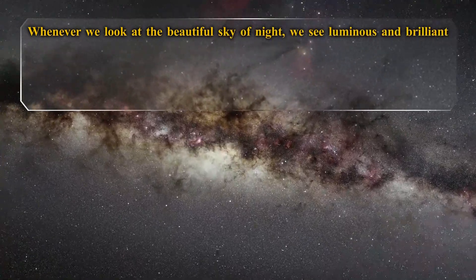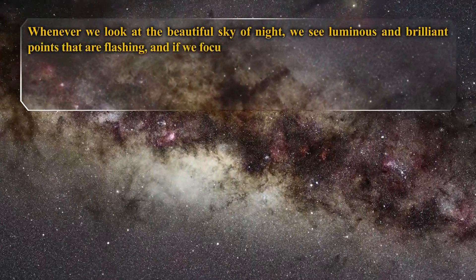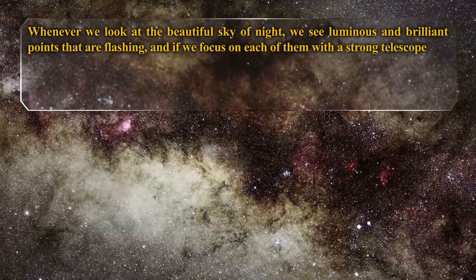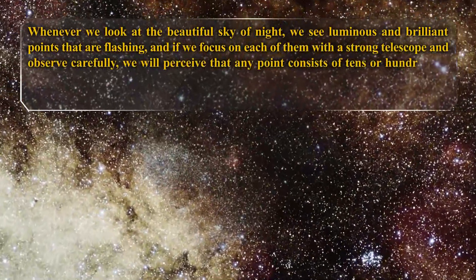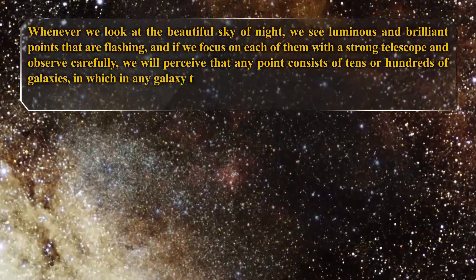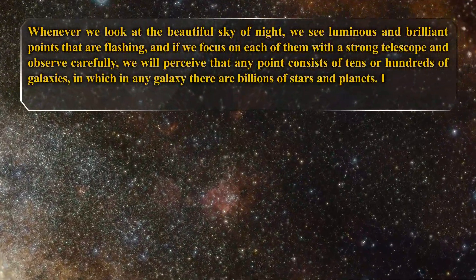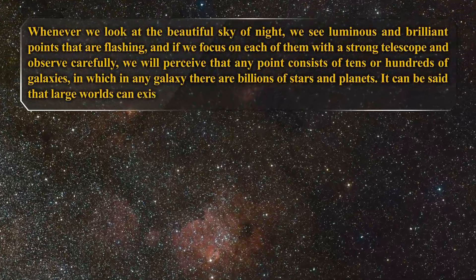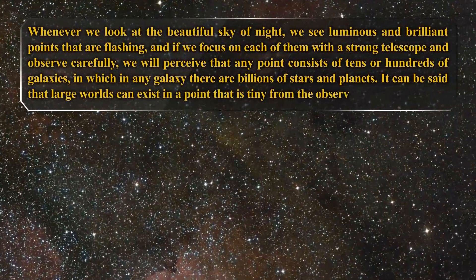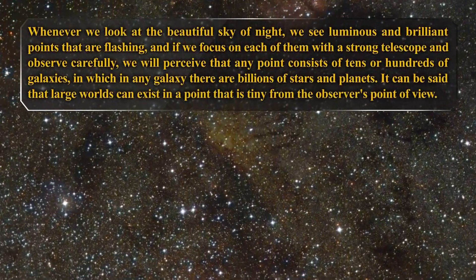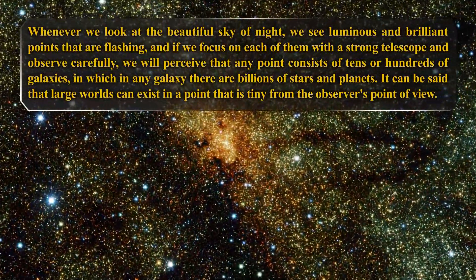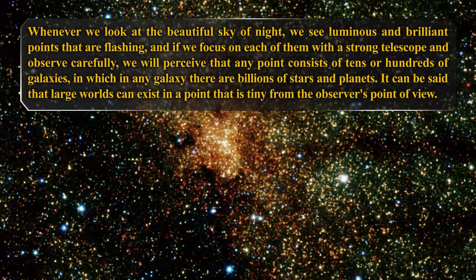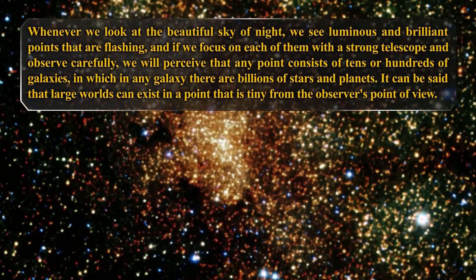Whenever we look at the beautiful sky of night, we see luminous and brilliant points that are flashing. If we focus on each of them with a strong telescope and observe carefully, we will perceive that any point consists of tens or hundreds of galaxies, in which in any galaxy there are billions of stars and planets. It can be said that large worlds can exist in a point that is tiny from the observer's point of view.